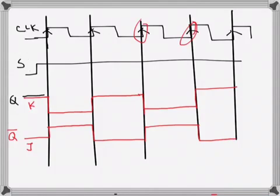And here again, J is zero and K is one, so Q will follow J, so no, and this is high. So that's how it will go.